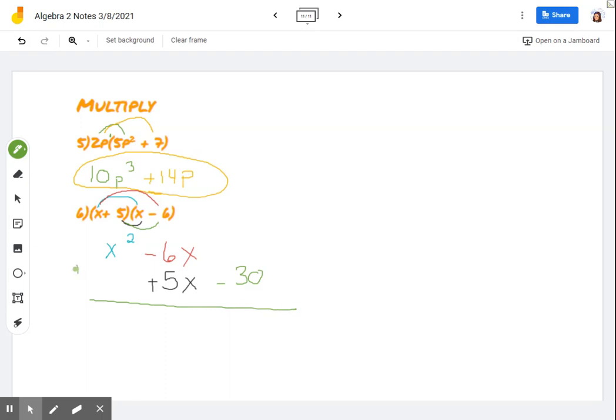From here, I'm just adding all my like terms together. So x squared minus x minus 30. So again, we've seen this a bunch of times. This is an example now of a quadratic trinomial. So thank you so much for watching our little video today.